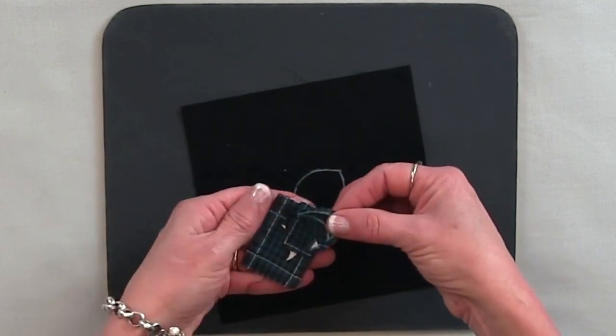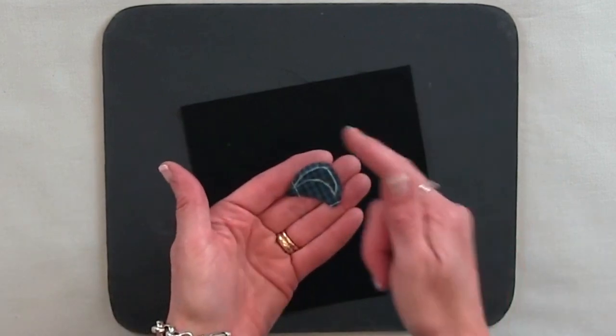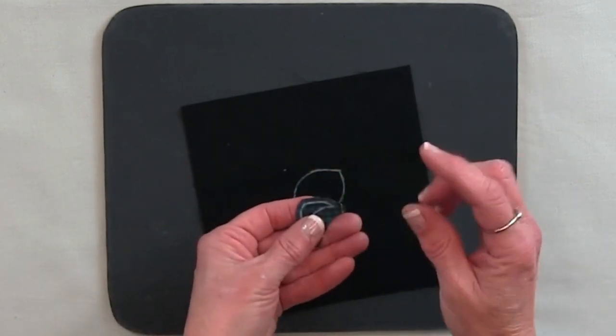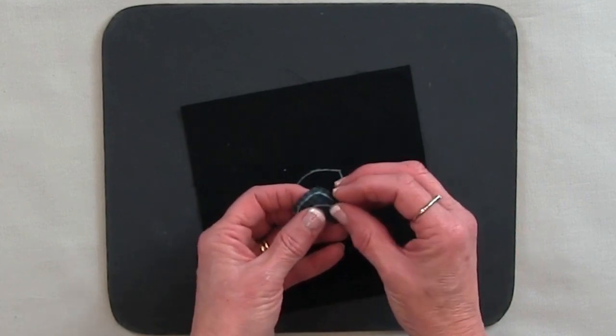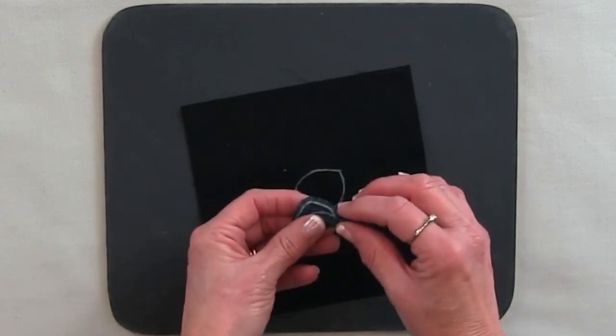So this shape that has freezer paper templates on it that I've traced around and taken off, I would finger press this, the edge, yes that side, I would finger press this side before positioning it on the bottom black piece of the eye.